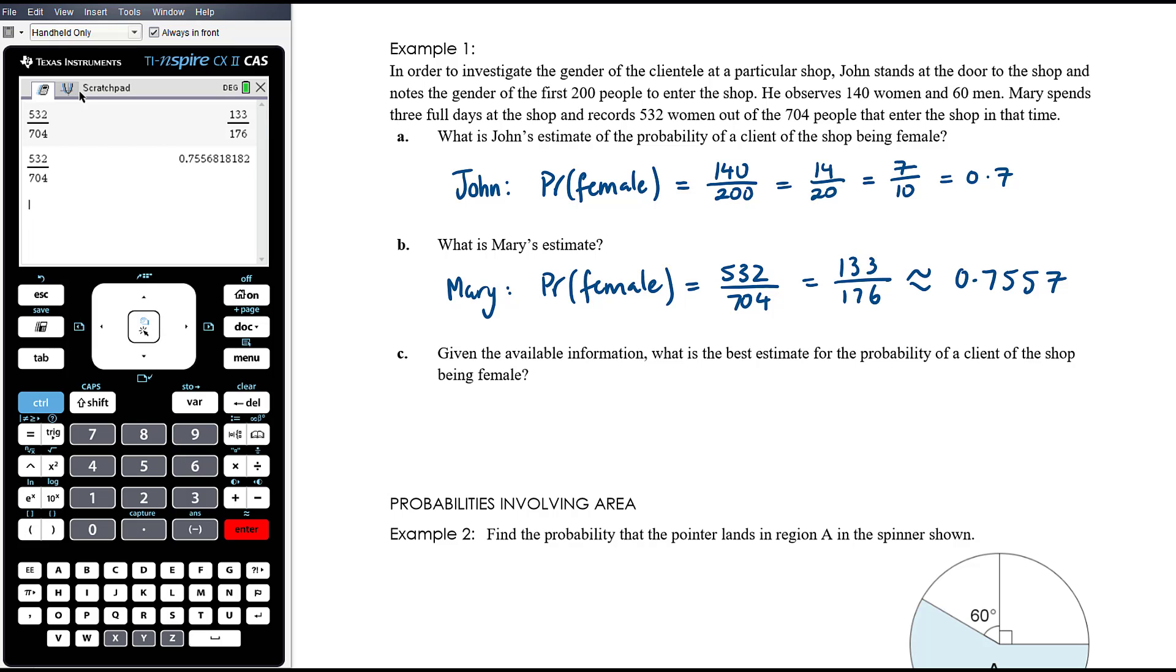Given the available information, what is the best estimate for the probability of a client of the shop being female? This isn't asking you out of parts A and B which one's better. Obviously Mary's estimate is better because she surveyed more people, she collected more data. But given the available information, we could add together John and Mary's data and have an even better prediction. A combined prediction in this case would be better. Although we would have to know that John and Mary weren't at the shop on the same day, otherwise we'd be counting the same data twice, which isn't valid.